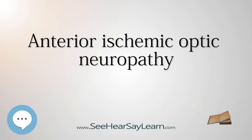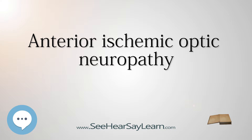Furthermore, most cases of NAION involve the loss of a hemifield, either the upper or lower half of the visual field, but not both. A few cases of NAION involve almost total loss of vision. Since arteritic ION is similar in presentation to non-arteritic ION, patients over the age of 50 diagnosed with NAION must be evaluated to exclude AION.